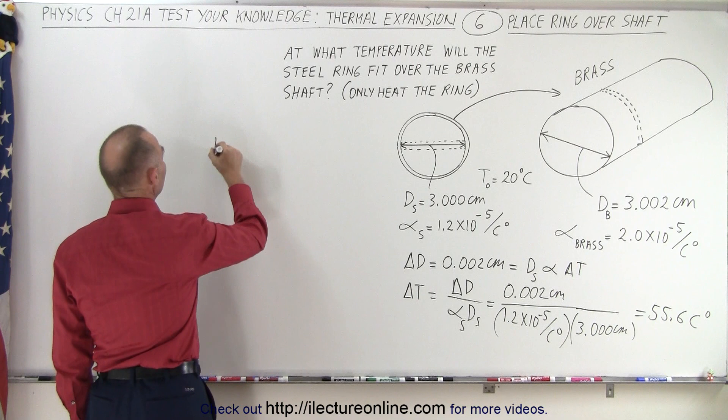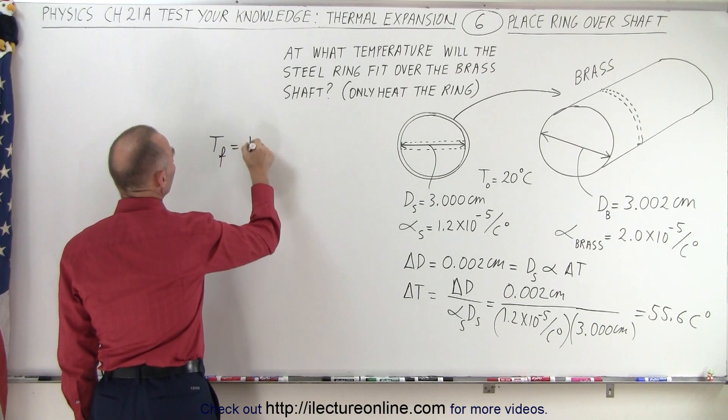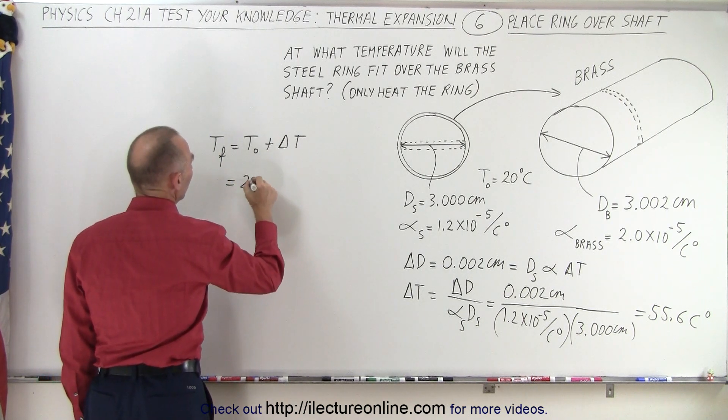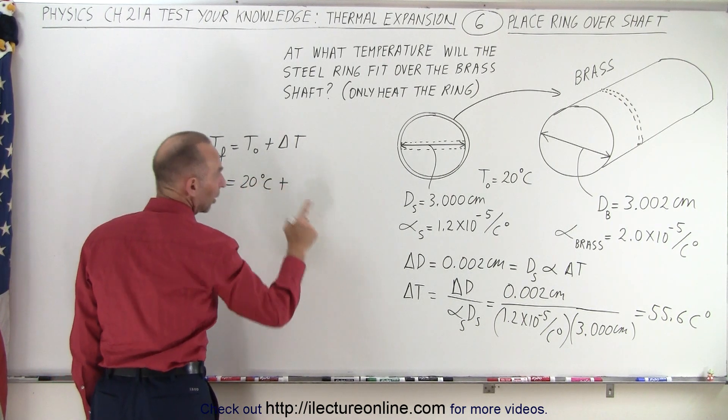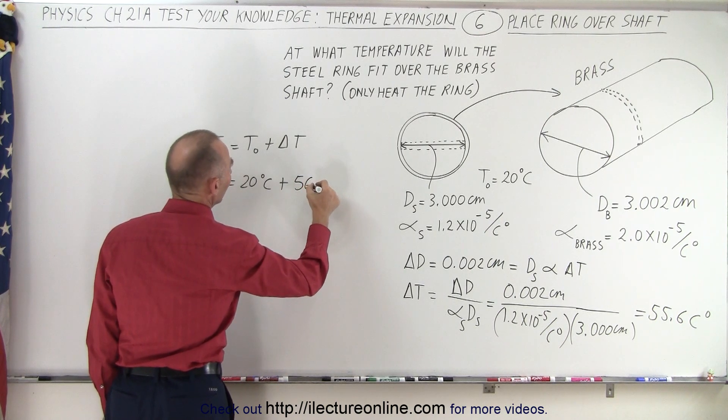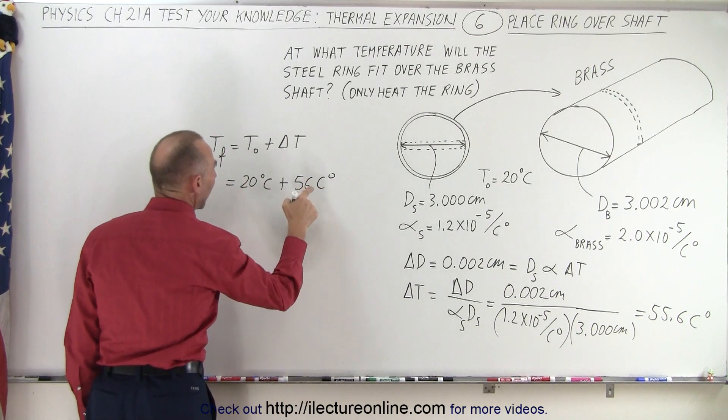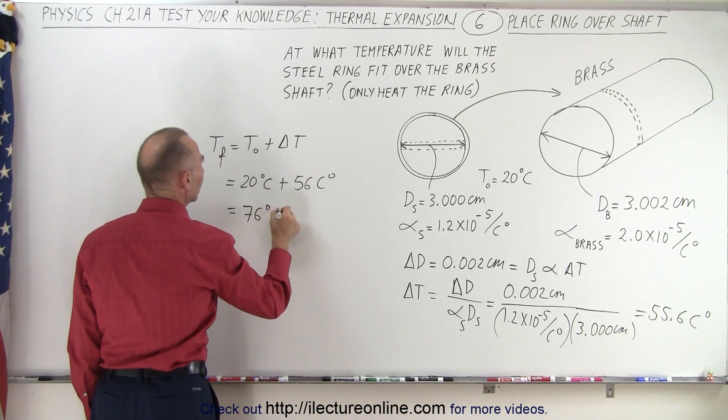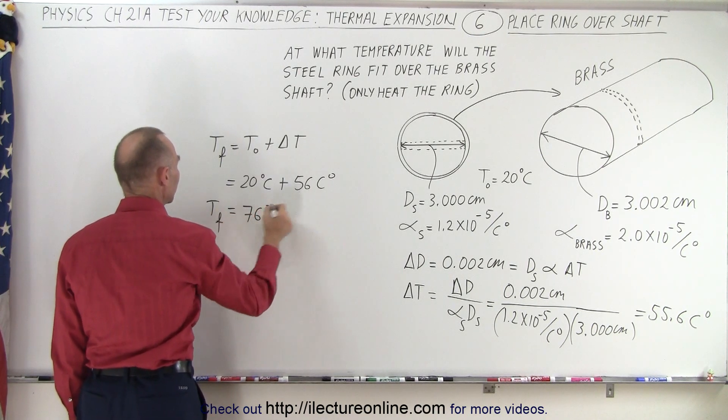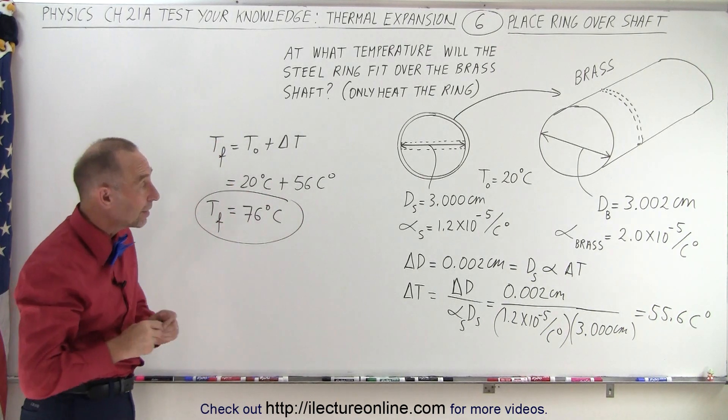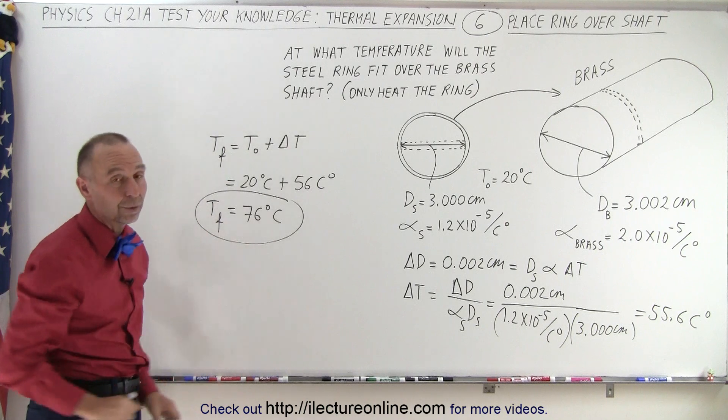Which means that T_final would be equal to T_initial plus the change in temperature, so the T_initial would be 20 degrees Celsius, plus an additional 56 Celsius degrees. When we add this to this, that is equal to 76 degrees Celsius for the final temperature, so all we have to do is heat the ring up to 76 degrees Celsius, and the ring will fit over the brass shaft.